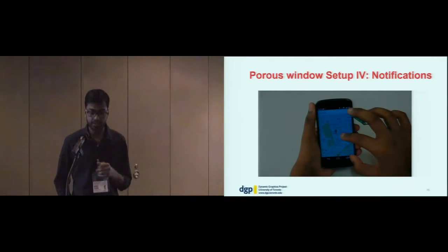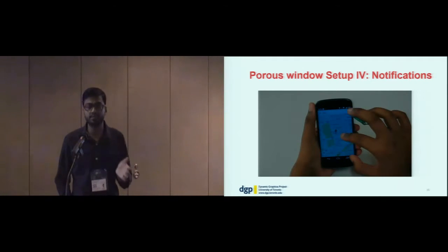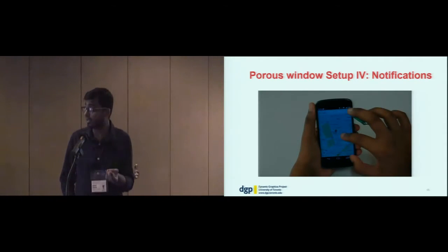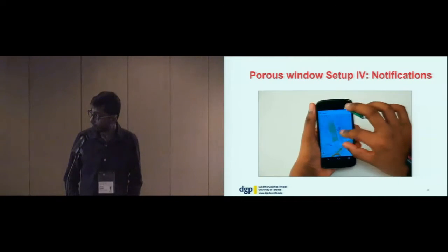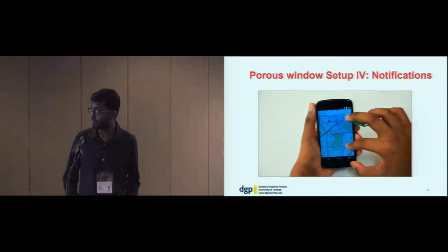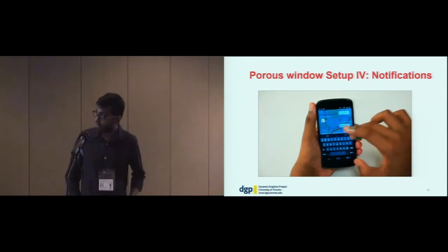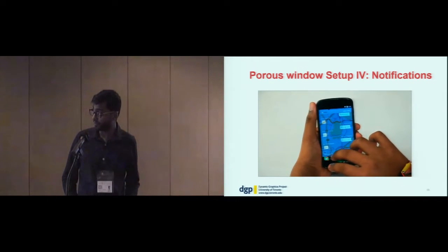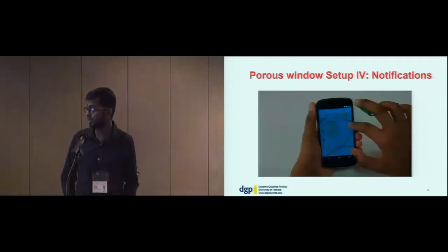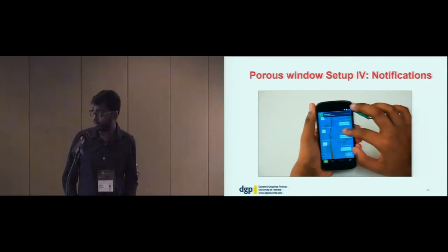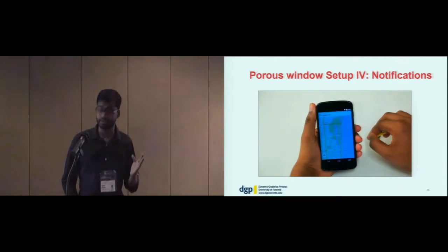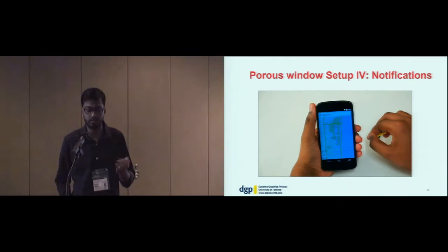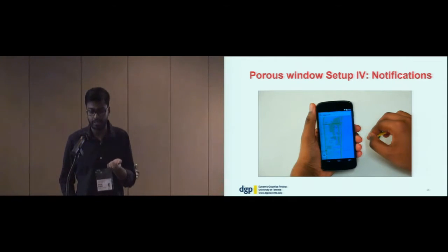The fourth scenario is notifications — one of the most frequent reasons users switch apps. A lot of times users want to address a notification quickly without switching away from their current app. When the user is using a maps app and gets a message, it shows up as a transparent messaging app overlay; they interact with it and then push it away. If the user doesn't want to interact, it goes away after three seconds. The user can customize which apps trigger this behavior.